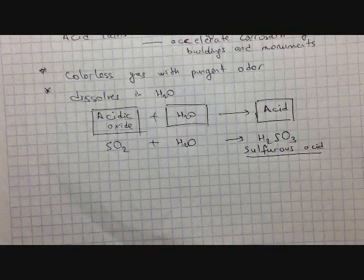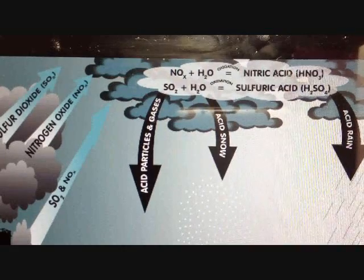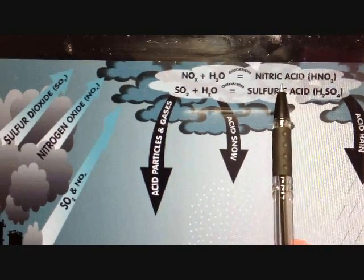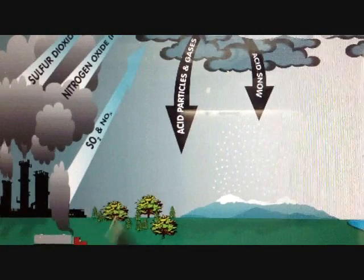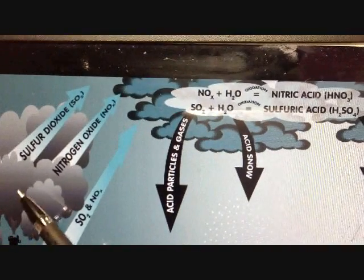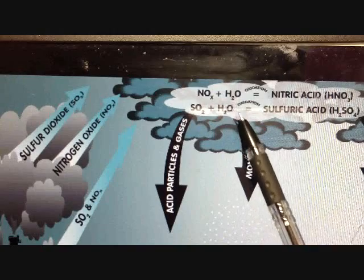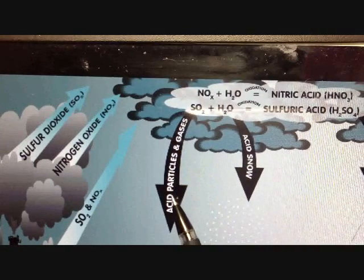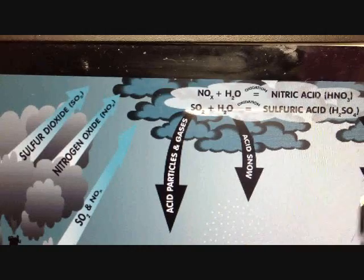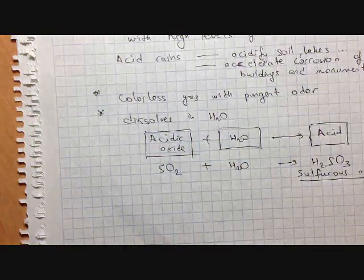Looking at the picture of acid rain: it is caused by two acids — nitric acid and sulfuric acid. Manufacturers produce gases like sulfur dioxide and nitrogen oxides, which react with water to form nitric acid and sulfuric acid. This then falls as acid rain or snow, and these acids react with metals causing corrosion.